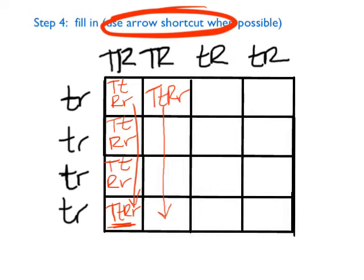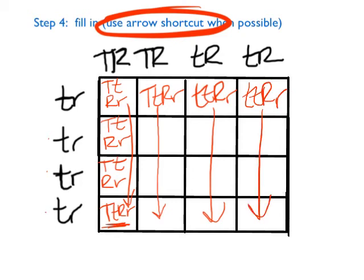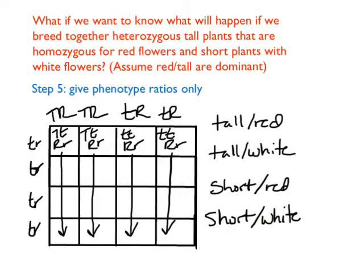The next column over is going to look exactly the same — big T, little t, big R, little r — so we use the arrow shortcut again. For the third column, from the top we have little t and big R, and from the side little t and little r, so it's little t, little t, big R, little r all the way down. And the last column is little t, little t, big R, little r as well. You don't have to fill in every single square — if you know they're going to be identical, use the arrow shortcut. Arrows can also go left to right if all squares across a row are the same.